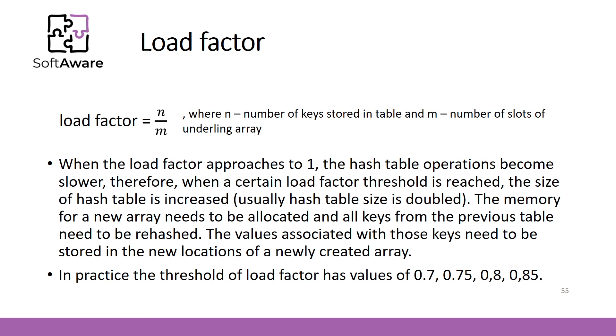Usually hash table size is doubled. The memory for new array needs to be allocated and all keys from previous table need to be rehashed. The values associated with those keys need to be stored in the new locations of newly created array. The common values of load factor threshold are 0.7, 0.75, 0.8, 0.85 and similar.